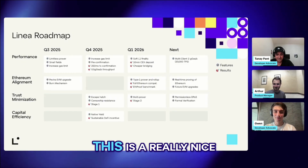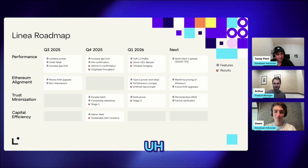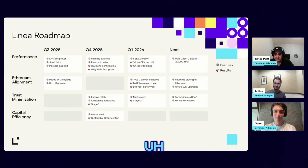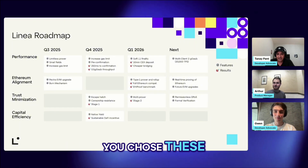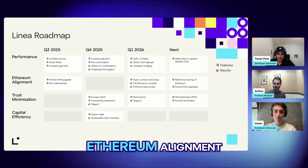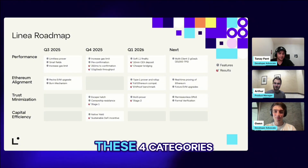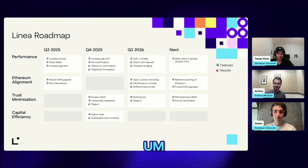Nice to have you both. Linea released its product roadmap last week and I see a lot of excitement in the community, so we thought it would be great to have Arthur on the stream to talk about it. This is a really nice looking product roadmap. We have four different categories divided by timeline: performance, ethereum alignment, trust minimization, and capital efficiency. Could you talk us through how you selected these four categories and what exactly they mean?